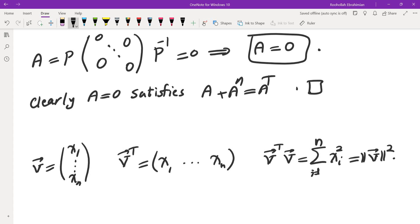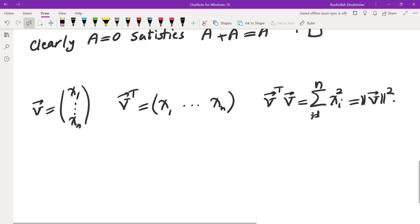Okay, so I used two facts here. More than two facts, but these two might be a little bit less well known. One of them was this one: V equals X1 through XN and V transpose equals X1 through XN horizontally. Then when you do the multiplication of matrices, you get sum of XI squared.